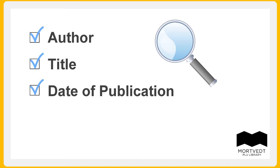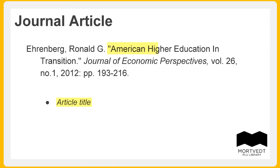For a journal article, these clues will include the presence of two titles: the title of the article and the title of the journal the article is published in. Journal citations may also include volume and issue numbers and page numbers.